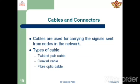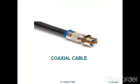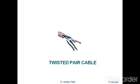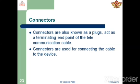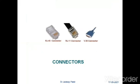Now next one is cables and connectors. Cables are used for carrying the signals sent from nodes in the network. Types of cables: twisted pair cable, coaxial cable, fiber optic cable. This is the coaxial cable, this is the twisted pair cable, and this is the fiber optic cable, which is used nowadays. Connectors are also known as plugs. Connectors act as a terminating endpoint of the telecommunication cable, and are used for connecting the cable to the device. These are the connectors — you might have seen them at the back of your computer or in computer labs.